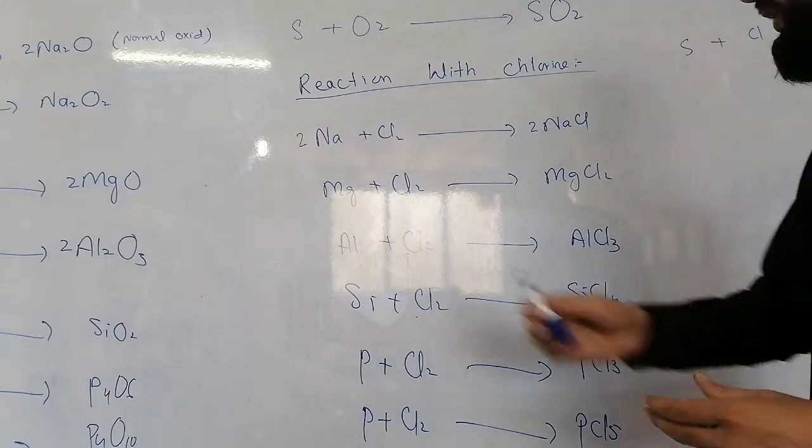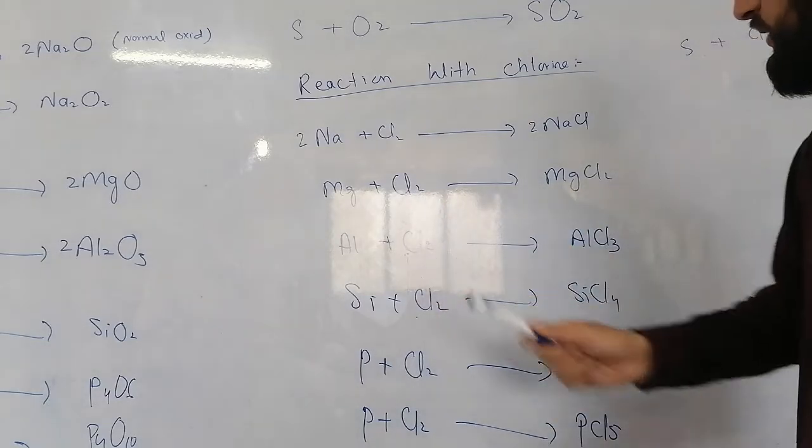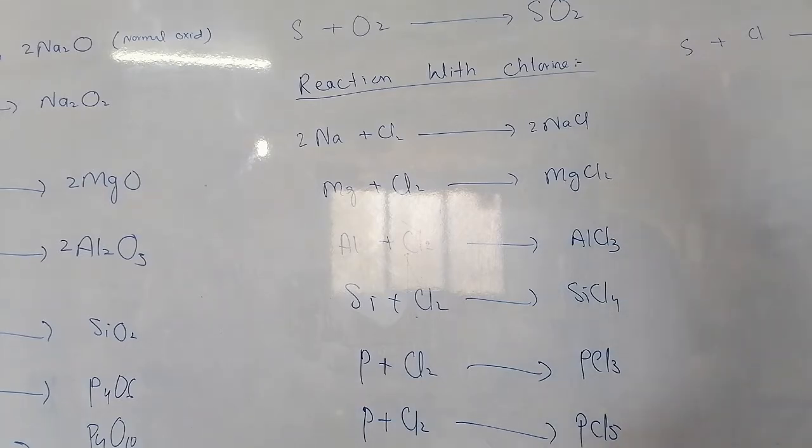Magnesium with chlorine to react gives magnesium chloride. Aluminum with chlorine to react gives aluminum chloride.